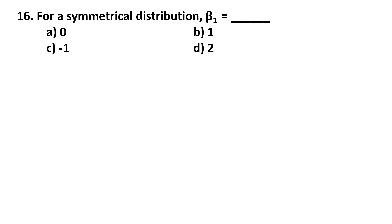So for a symmetrical distribution, beta1 is equal to: 0, 1, minus 1, or 2.